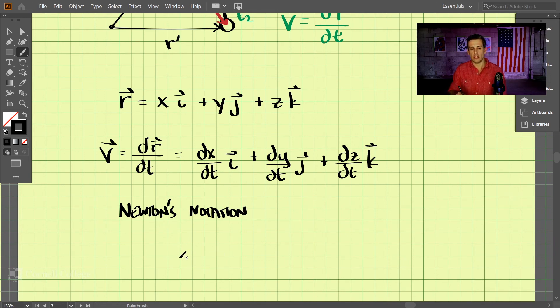Newton's notation. What Newton's notation is, is dx/dt is just written as x dot. This dot on the top just means the first derivative of x with respect to time. And dy/dt is written as y dot, and dz/dt is written as z dot.